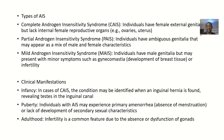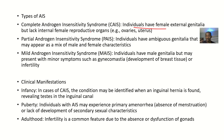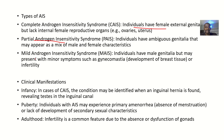There are different types of androgen insensitivity syndrome. In complete androgen insensitivity syndrome, individuals have female external genitalia but lack internal female reproductive organs — the outside appears female but ovaries and related structures are absent. In partial androgen insensitivity syndrome, individuals have ambiguous genitalia appearing as a mix of male and female characteristics. In mild androgen insensitivity syndrome, individuals have male genitalia but present with mild symptoms such as gynecomastia — the development of breast tissue.